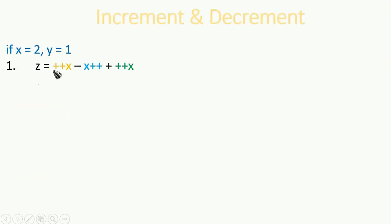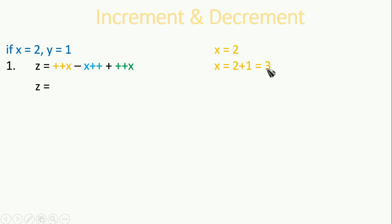The first sum: z is equal to ++x - x++ + ++x. Here we can see pre-increment. Pre-increment means the value of x is going to be incremented and then stored. So x is equal to 2, then pre-increment makes it 3. That 3 is substituted, then minus x++. When we substitute the value, the value stored last is in the computer's memory, not from the sum as given.